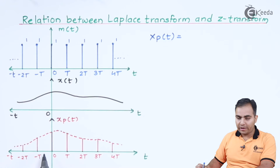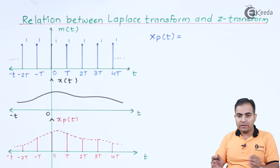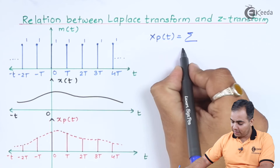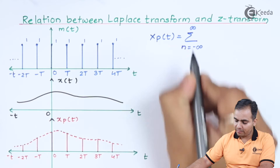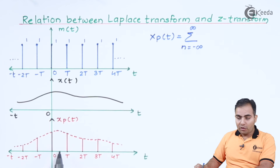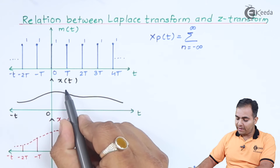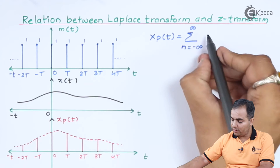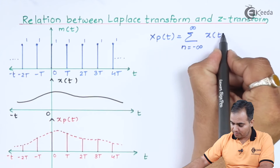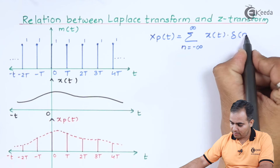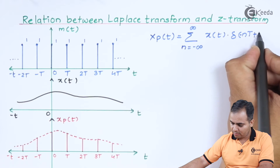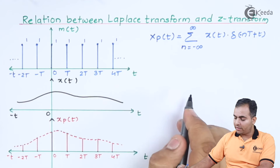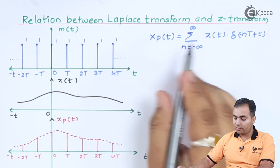If I want to accumulate all the samples, we will always use a summation sign, with the value starting from minus infinity to infinity. This output is obtained just by multiplying x(t) with a train of impulses, so I'll multiply x(t) with delta(t minus nT).